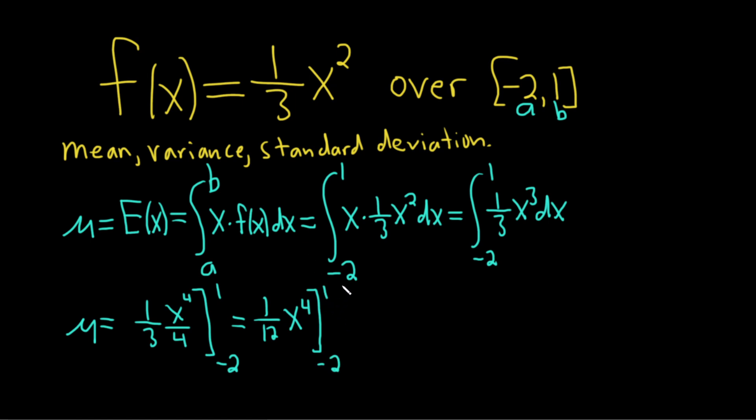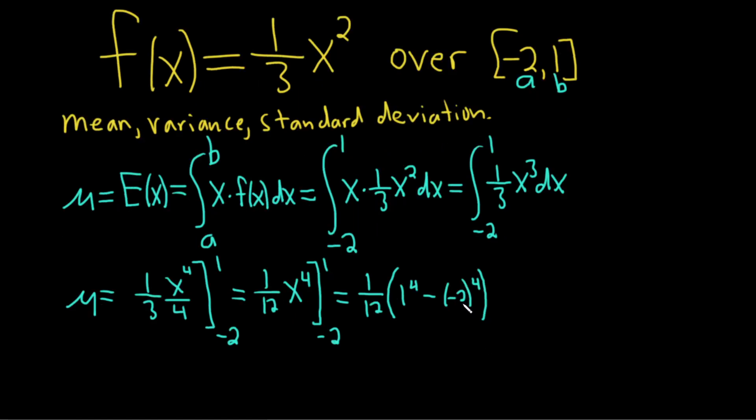Now we'll plug in the first number, the 1. This equals one-twelfth times 1 to the fourth minus negative 2 to the fourth.